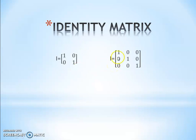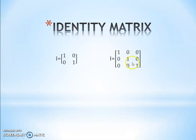For the 3 by 3 square matrix, I is equal to the matrix where a11 is 1, a12 is 0, a13 is 0, a21 is 0, a22 is 1, a23 is 0, a31 is 0, a32 is 0, and a33 is 1. So the diagonal entries are 1, and such an identity matrix is used for 3 by 3 order matrices.